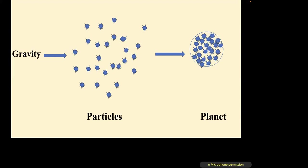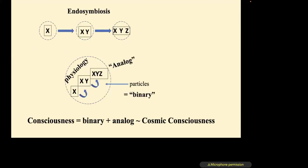Schematizing symbiosis going from X to XY to XYZ, the first step in the evolution of consciousness was binary — the cell membrane is a semi-permeable membrane governing what substances enter or exit the cell. Factors internalized in the XY, XYZ schematic are analog, providing the basis for physiology through cell-cell communication. There's a connection between local consciousness and cosmic consciousness through this mechanism.